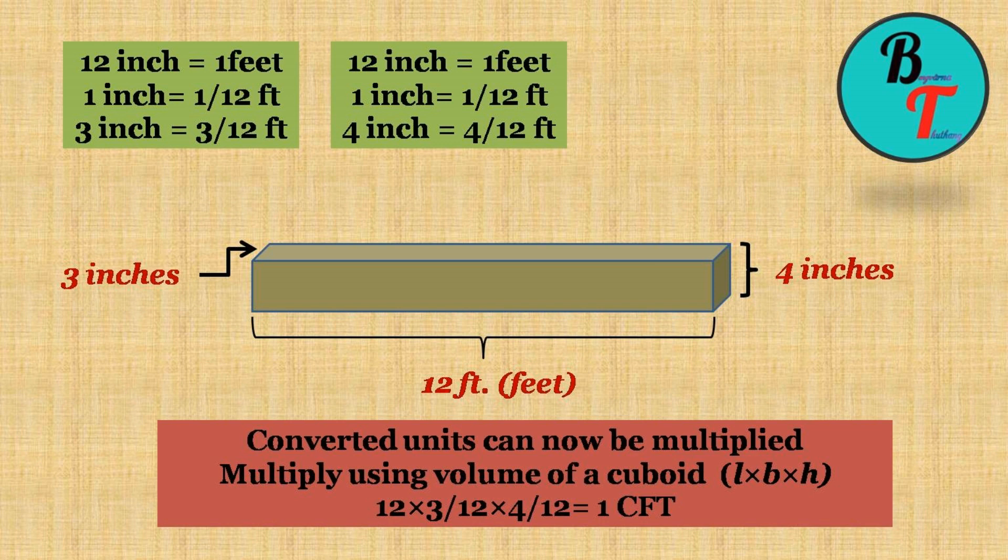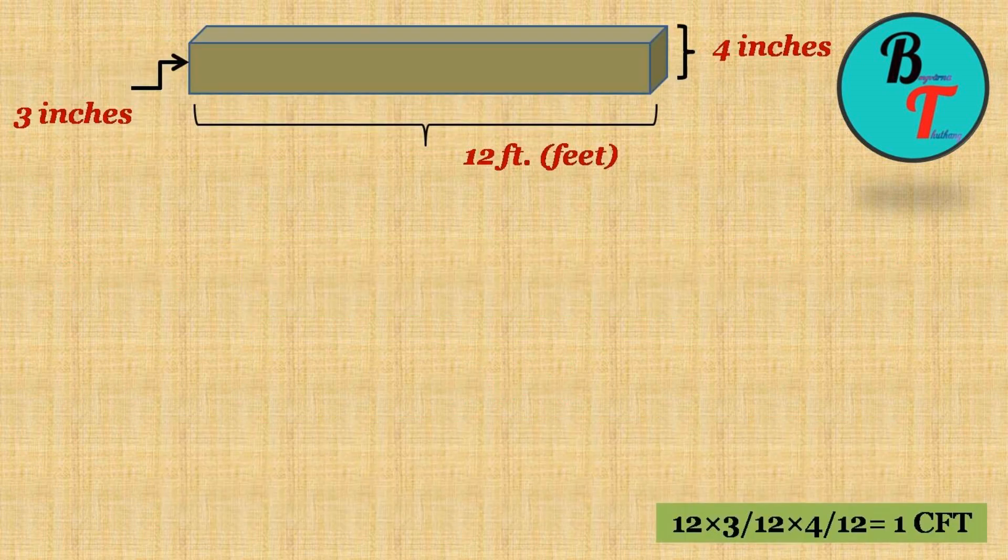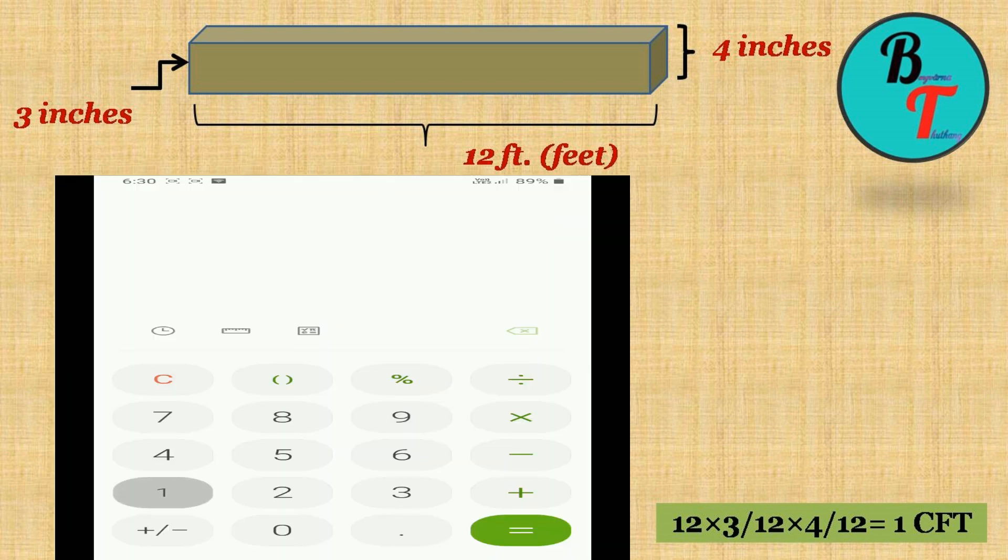Now the converted units can be multiplied using the formula for volume of a cuboid l into b into h: 12 into 3 by 12 into 4 by 12 equals 1 CFT. You can check your calculator which comes to be 1 CFT. 12 into 3 divided by 12 into 4 divided by 12 equals 1.